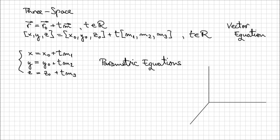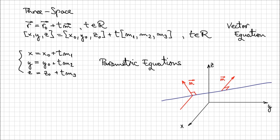One more thing: a normal vector to a line is perpendicular to it. In 3-space, you can have an infinity of normal vectors to a line — at any point on the line they can point all around it, and they are not necessarily parallel to each other. This is why we cannot use a scalar equation to describe a line in 3-space the same way we do in 2-space.